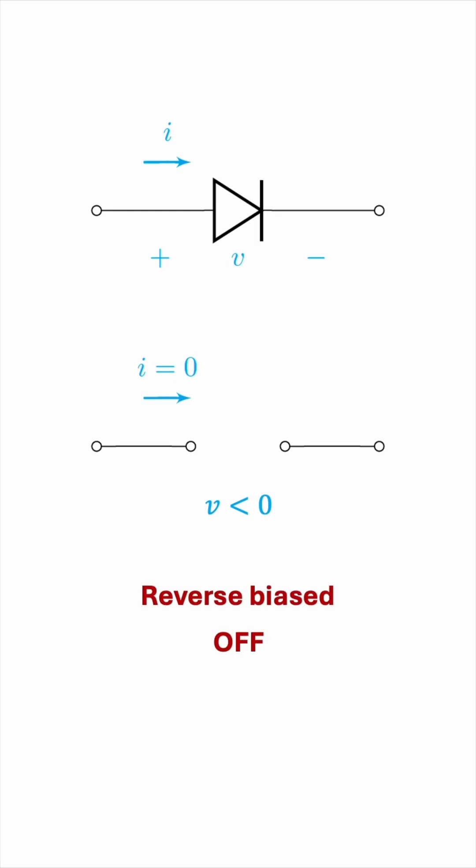On the other hand, if the anode is at a higher potential, then the diode conducts almost perfectly, as if it were a short circuit.